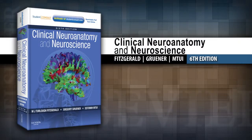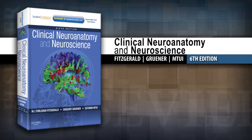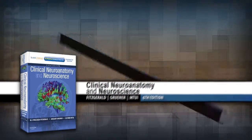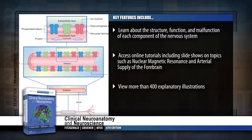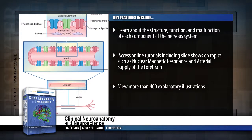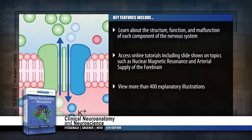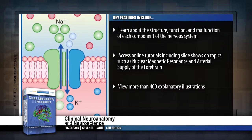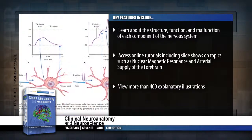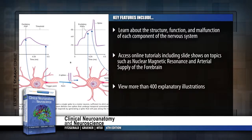Introducing Clinical Neuroanatomy and Neuroscience 6th Edition with Student Consult Online Access. Already known as the most richly illustrated book available on the topic, this updated edition brings improved online resources with clear visual images and concise discussions accompanying each of the text's 30 case studies, along with considerable online content at studentconsult.com.